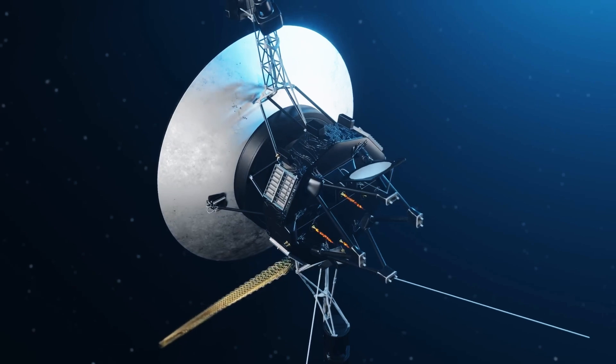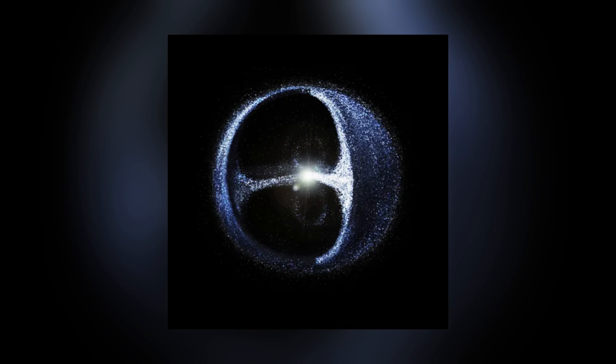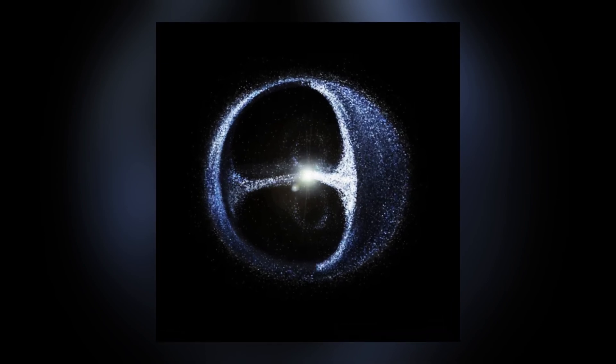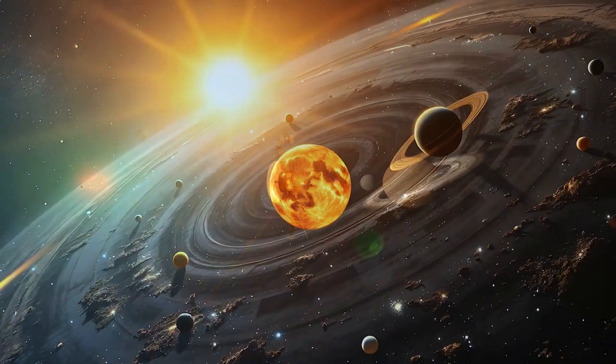If the Voyagers continue on their trajectories, Voyager 1 will take about 300 years to reach the inner Oort Cloud and potentially 30,000 years to traverse it, marking the true end of its journey within our solar system.